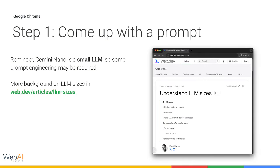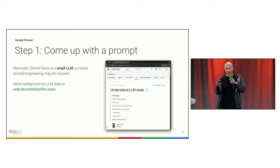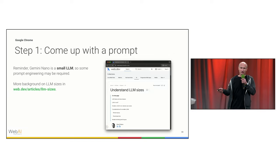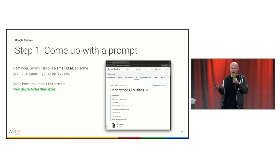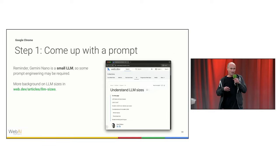In Chrome we ship Gemini Nano, a comparably small LLM, which means some prompt engineering may be required. Definitely do not expect the quality of much larger models like Gemini 1.5 Pro. We have more background on LLM sizes in an article published at web.dev/articles/llm-sizes. Gemini Nano is really a small model.